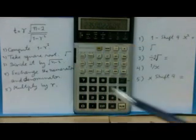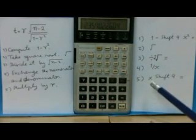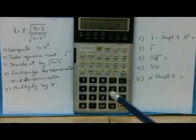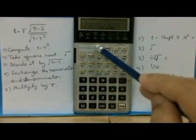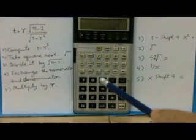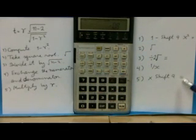Now you multiply this by R, so press multiply, shift 9, multiply by shift 9, finally equal to,